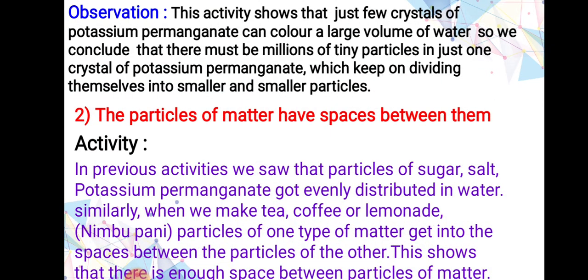Just a few crystals of potassium permanganate or ink can color a large volume of water. We conclude that there must be millions of tiny particles in just one crystal of potassium permanganate, which keep dividing into smaller and smaller particles. That is why dissolving a few crystals distributes particles even into the last beaker — confirming that particles of matter are very small in size.